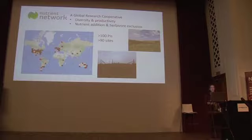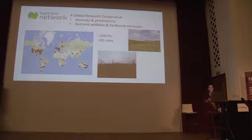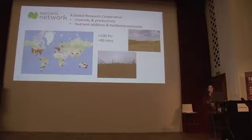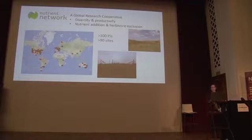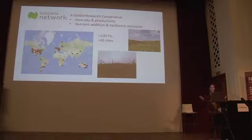This model of team science is where the same experiment is done across a number of different sites. We're interested in links between species diversity — plant species diversity in particular — and biomass productivity. There's a nutrient addition experiment where nutrients are added to different plots, and a herbivore exclusion experiment with fences to exclude large grazing herbivores. The beauty is having the same experiment at multiple sites, letting us talk about generality in ecological processes at a global scale in grasslands worldwide.